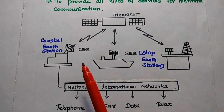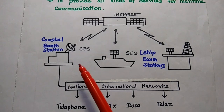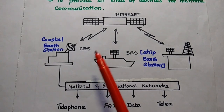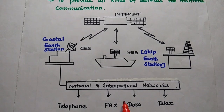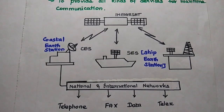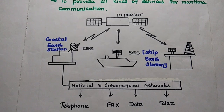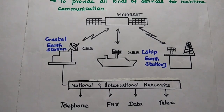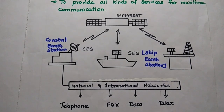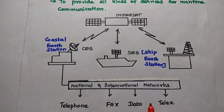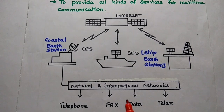CES — that is, the Coastal Earth Station — provides an interface between the space segment and fixed national and international telecommunication networks. It can provide services through telephone, fax, data, and telex. These are the various services covered by Inmarsat mobile services.